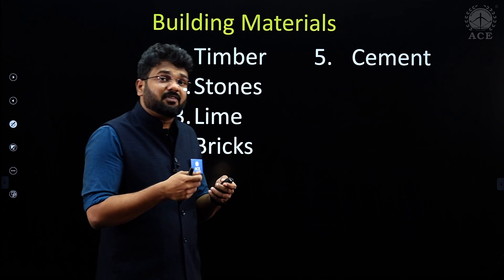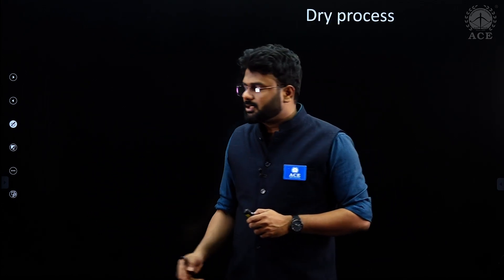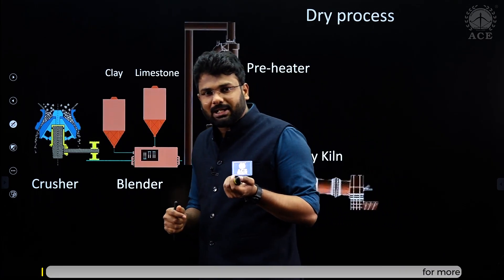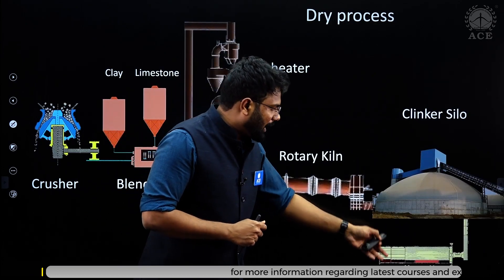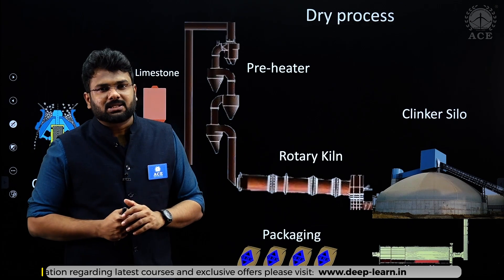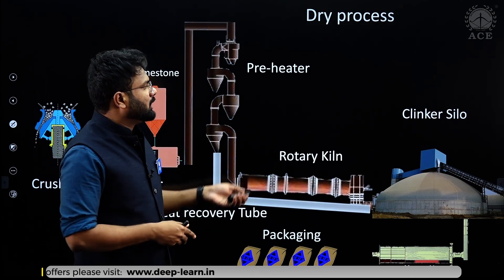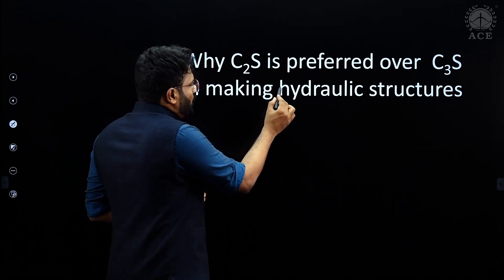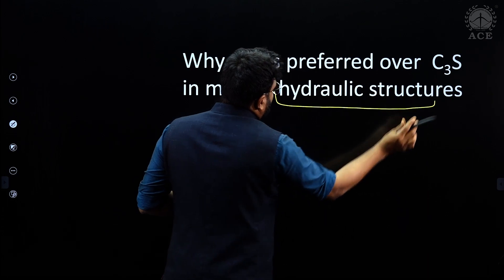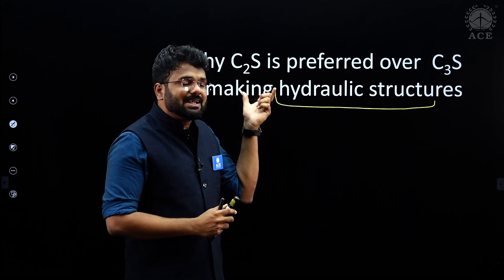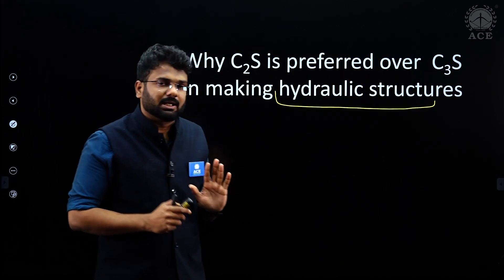Next is cement. We will understand how manufacturing is done — for example, the dry process involves the crusher, blender, preheater, rotary kiln, clinker silo, ball mill, and then packaged cement. We will also understand specific questions such as: in hydraulic structures, why is Bogue's compound C2S preferred over C3S? That we will understand in detail.